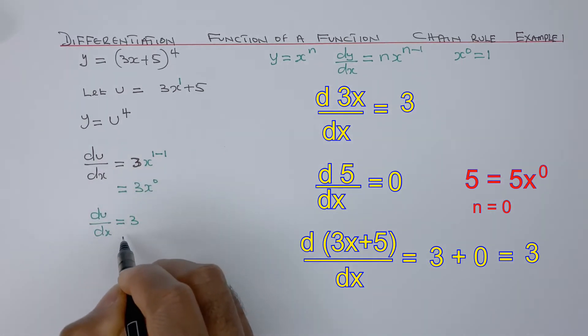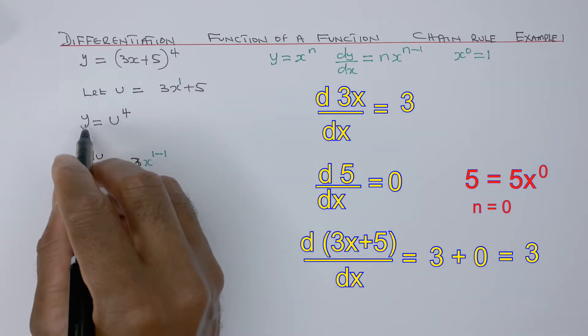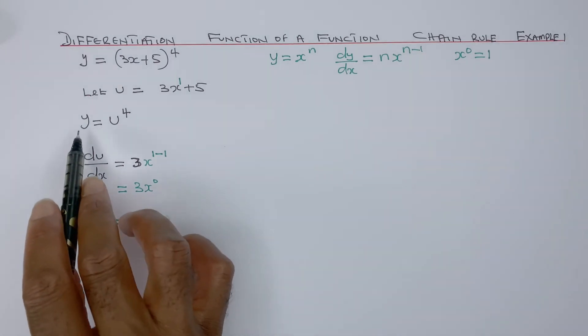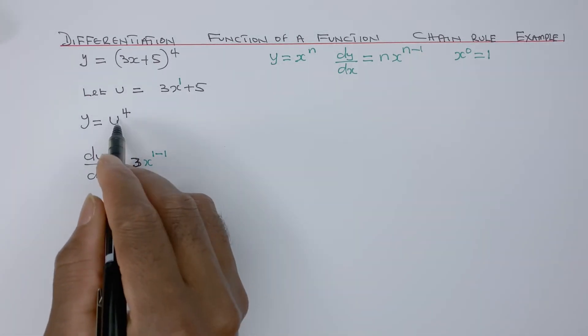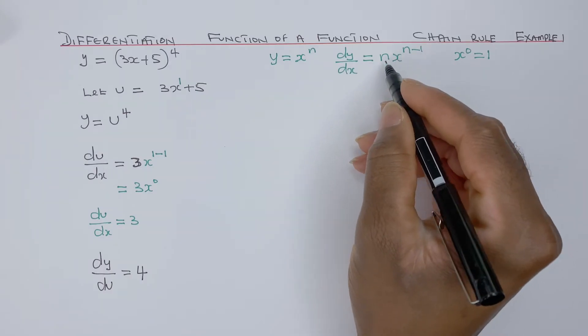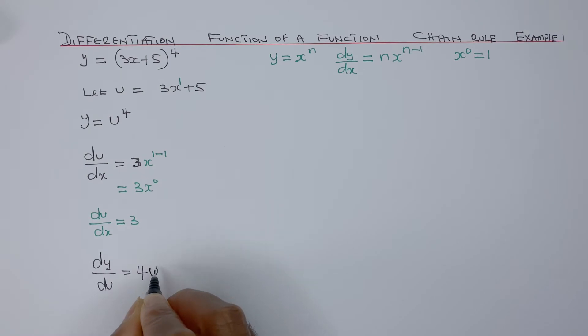Now we know what du/dx is. We need to find dy/du. So dy/du would be, in this case x is u, so that would be 4u to 4 minus 1, which is 3. So that's dy/du.